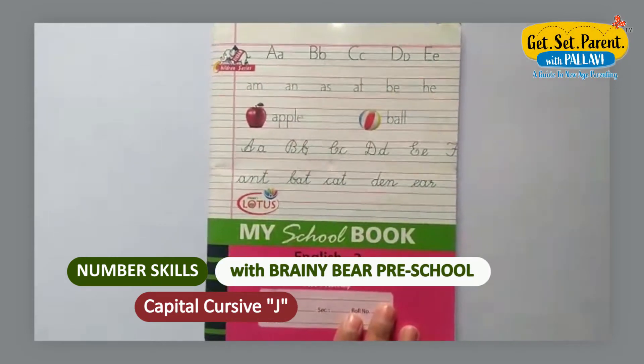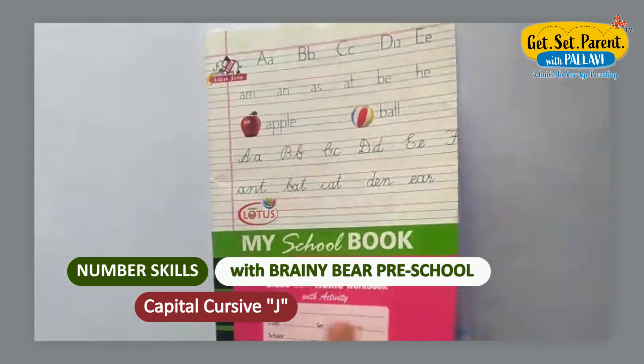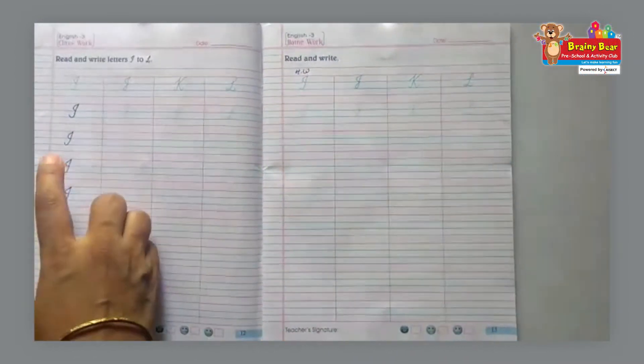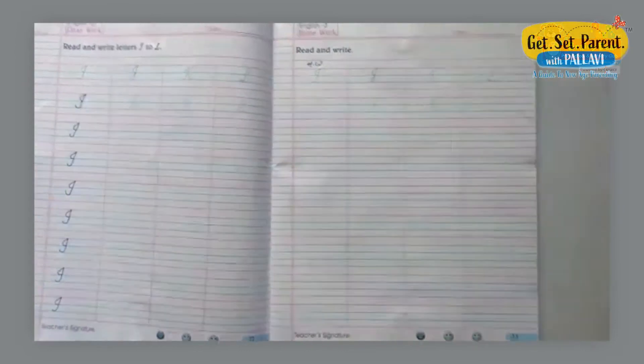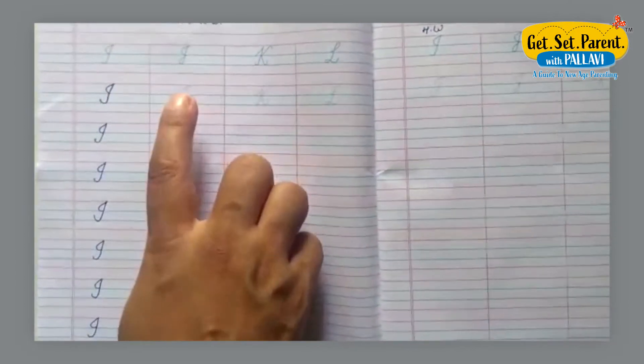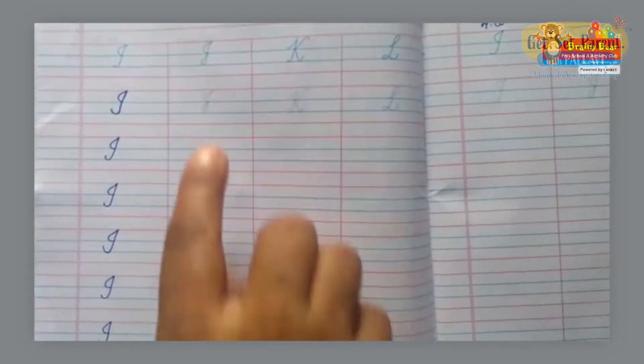Now we'll do Cursive Writing. Take your Cursive Notebook and open page number 12. We have done I. Today we'll do J, Capital Cursive Letter J.